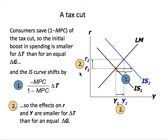Before moving on, there is one more point I would like to make. Every dollar of government spending increases the aggregate spending. So if government expenditure increases by delta G, then people's income initially increases by delta G. However, if there is a tax cut by the amount delta T, then the initial increase in consumption is not going to be delta T, rather MPC times delta T.